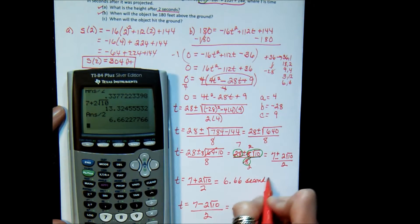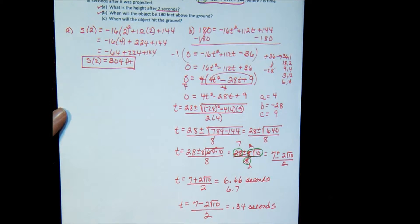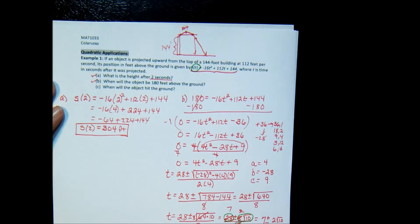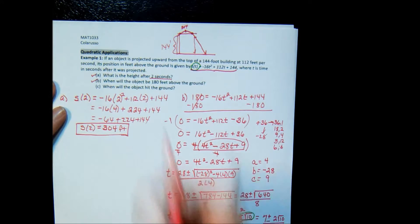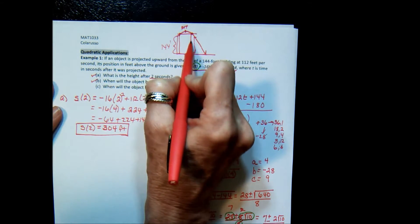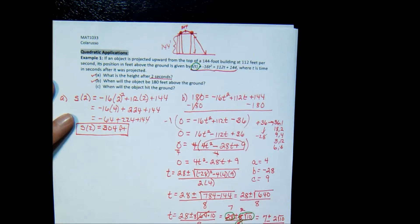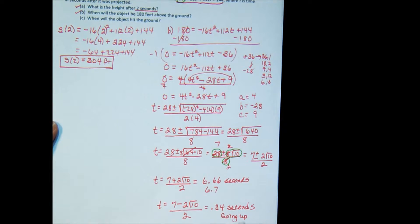If you wanted to round that off to 6.7, that would be okay also. Now, let's look at this in the context of our problem. We have two answers. Well, we said that this object that was projected would hit that height at two different times, once going up and once coming down. So this one was going up, this one, and this one was going down. That problem had a lot of work to it.